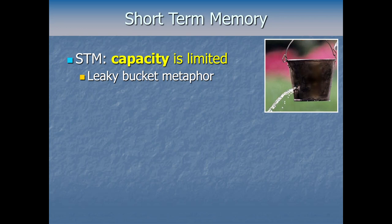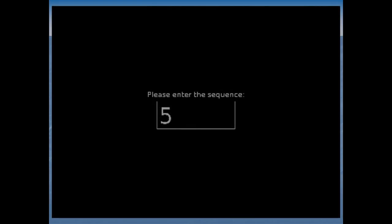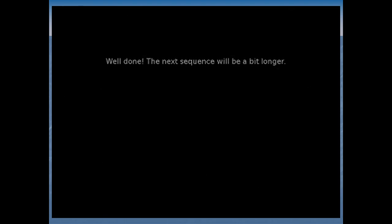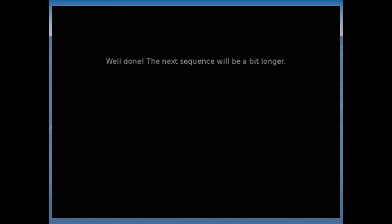So if you're doing the digit span task, it might look something like this. Six, five, seven, eight. And then since you got it right, then it's five digits this time. If you get it wrong, then they shorten it the next time. You get the idea. That's the digit span task.